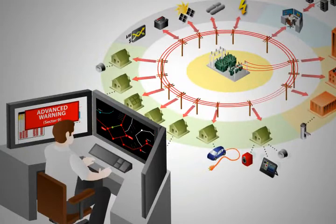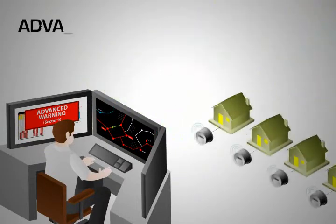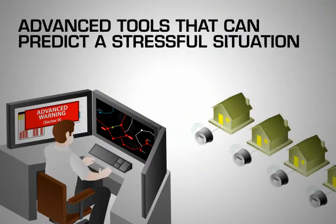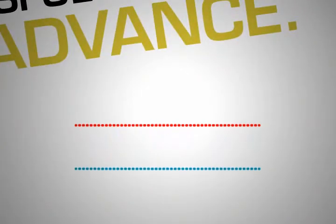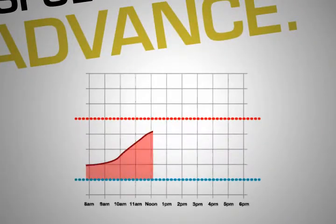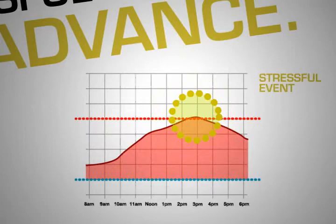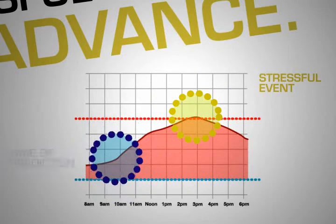The system operators watching the electrical grid have advanced tools that can predict a stressful situation on the electric grid hours in advance. These advanced tools will then develop a plan of action to alleviate the situation. These predictions are made before the event, so the operator and our customers can be prepared prior to an event.